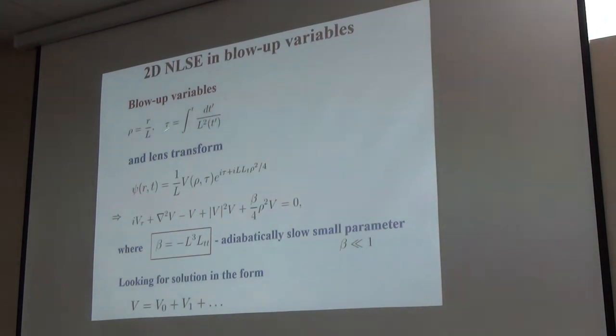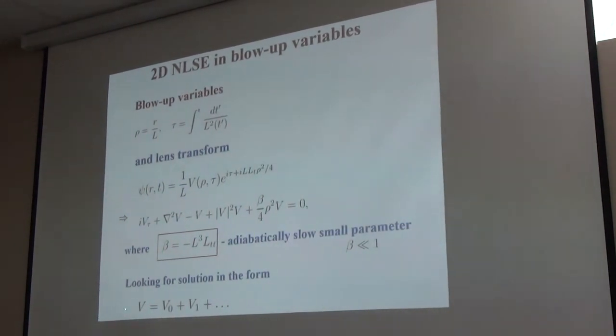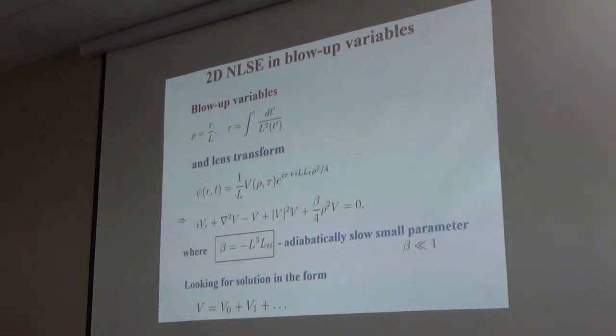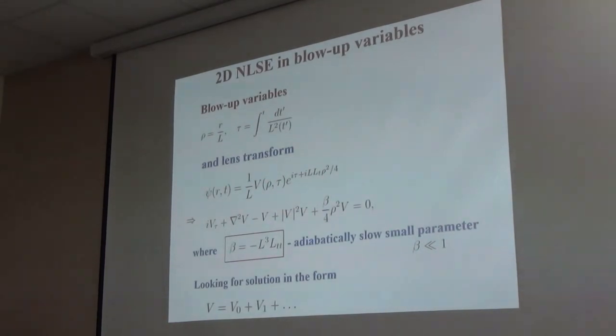With this transformation, finite collapse time is mapped to infinite time in new variable tau. We can introduce Lens transformation, absolutely exact transformation from old variable psi to new variable V, with this stretching factor and complex phase. If you plug this into the nonlinear Schrödinger equation, we obtain this equation in these blow-up variables. Beta is just this quantity, an adiabatically slowly varying quantity. The idea of this transformation is that we try to sit on collapsing solution and then look at small perturbation around this solution.